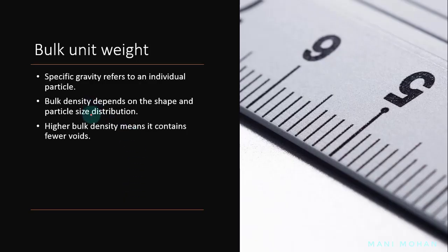Bulk unit weight: specific gravity refers to an individual particle. However, when aggregate is used for concrete, it contains voids. It is not possible to pack the aggregate so that it does not contain voids; therefore, bulk density of aggregate is determined. Bulk density depends on the shape and particle size distribution. Using well-graded aggregate will yield fewer voids, meaning bulk density will be higher.